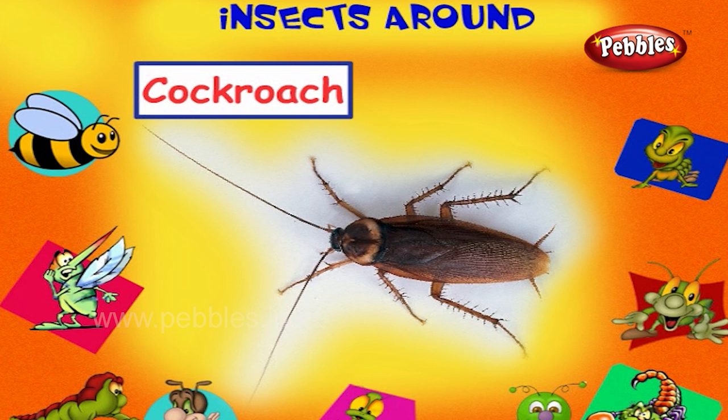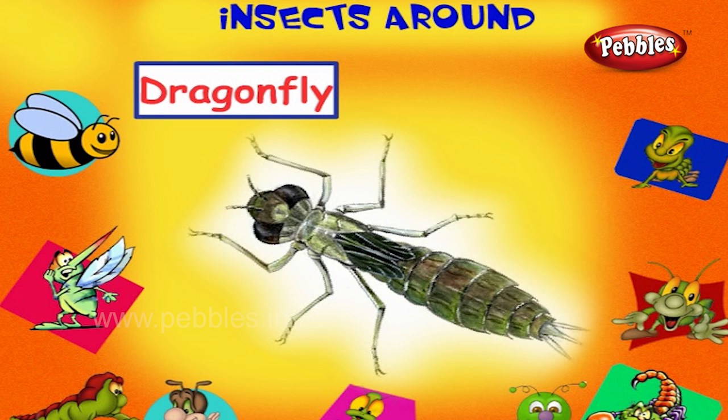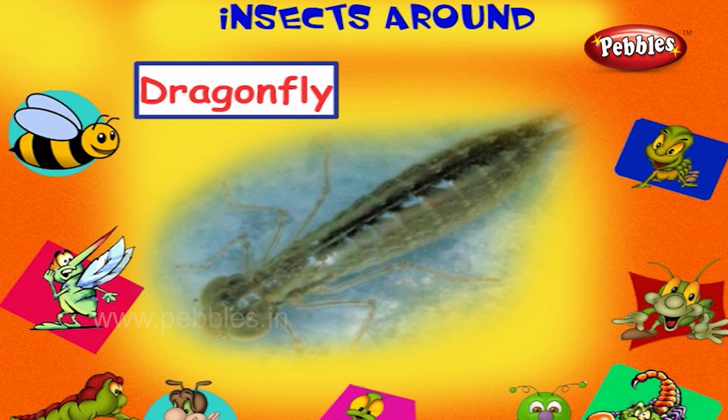This is a dragonfly. It flies and catches insects to eat. Its larvae live in the pond and feeds on the mosquito larvae. Thus, it controls mosquito.